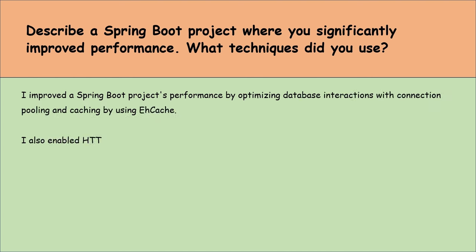Discuss how you would secure a Spring Boot application using JSON Web Tokens. To use JWT for securing a Spring Boot application, I would set it up so that when users log in, they get a JWT. This token has their details and permissions. For every subsequent action, the app checks this token to see if they are allowed. I would use special security filters in Spring Boot to grab and validate the JWT on each request. This way, the app doesn't have to keep querying the database to verify who the user is, making things faster and safer, especially for apps with many users or that need high security.